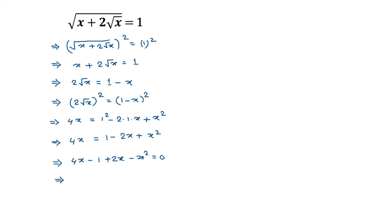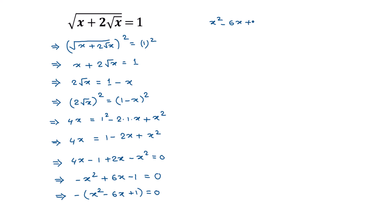So we have negative x squared plus 6x minus 1 is equal to 0. Taking common factor of negative 1 from the left side gives negative of x squared minus 6x plus 1 equals 0. Multiplying both sides by negative 1, it becomes x squared minus 6x plus 1 is equal to 0.